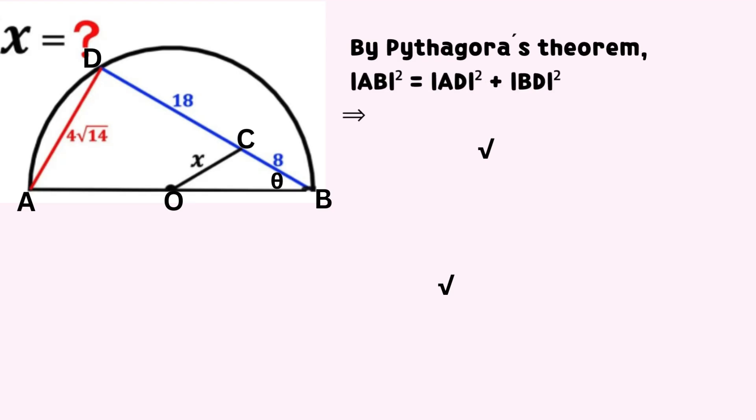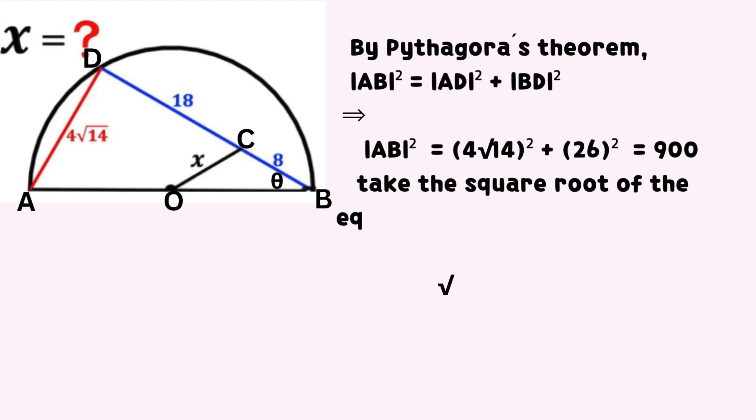By Pythagoras theorem, AB² equals AD² plus BD². Hence, AB² equals (4√14)² plus 26², which equals 900. Take the square root of the equation. Line AB equals √900, which equals 30.